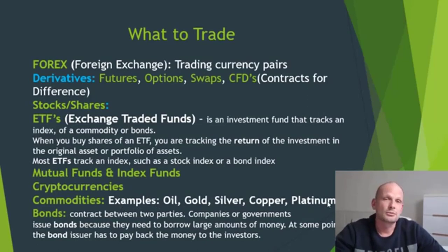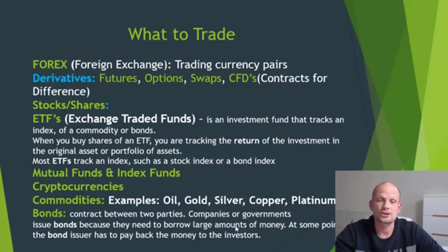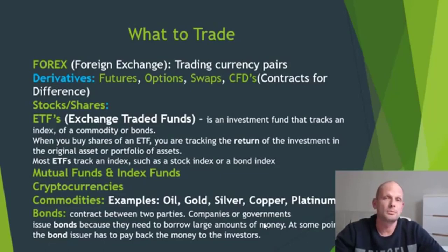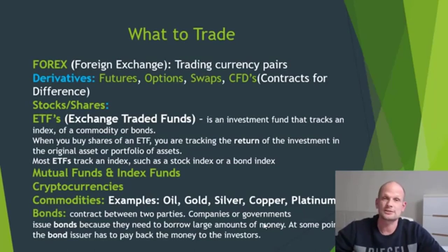Next we move to commodities — examples include oil, gold, silver, copper, and platinum. Then we have bonds, which are contracts between two parties. Companies or governments issue bonds because they need to borrow large amounts of money. For example, China owns a lot of US bonds. When a government issues bonds, it collects money from people and promises to buy back those bonds after some period of time at a higher price. There can also be dividend payments to bondholders — once, twice, or three times a year.